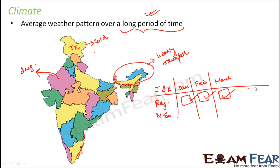And looking at the weather conditions of past several years, you see that the climate of this particular place is cold or it is dry or it has heavy rainfall. So climate can be decided based on the weather pattern of a particular place.